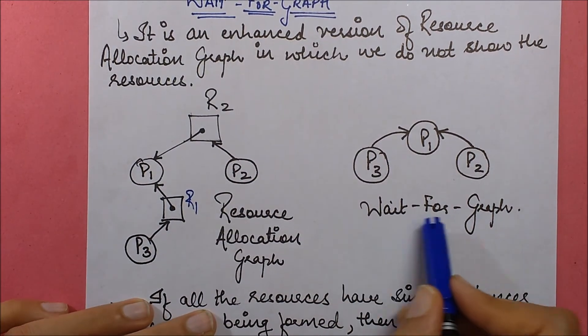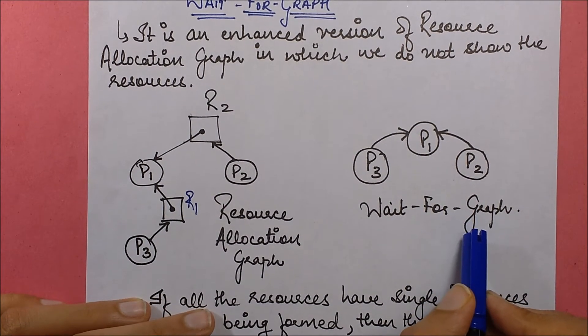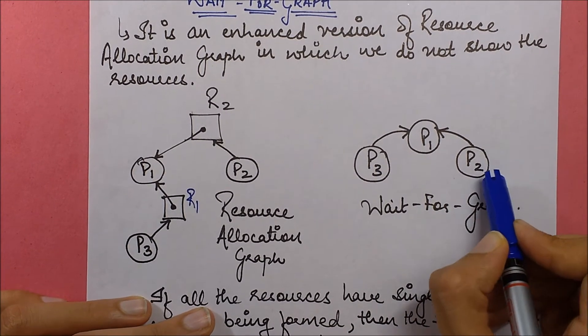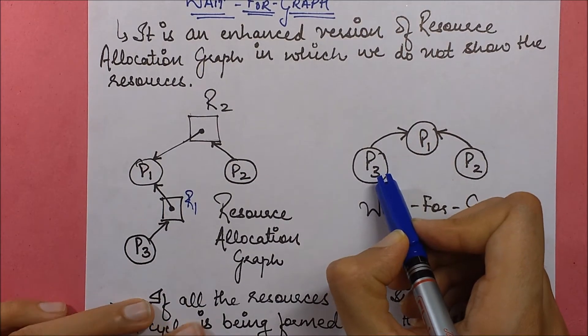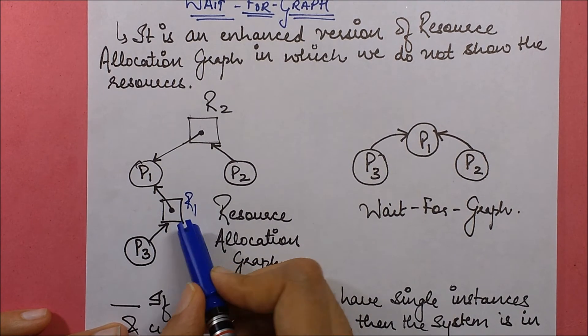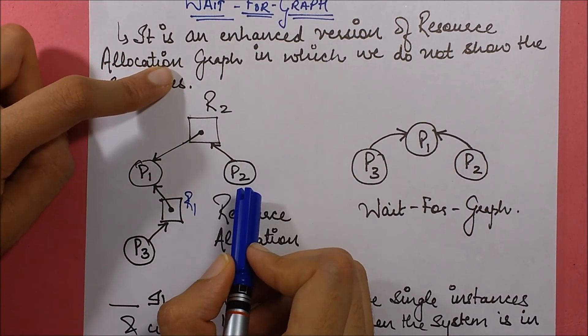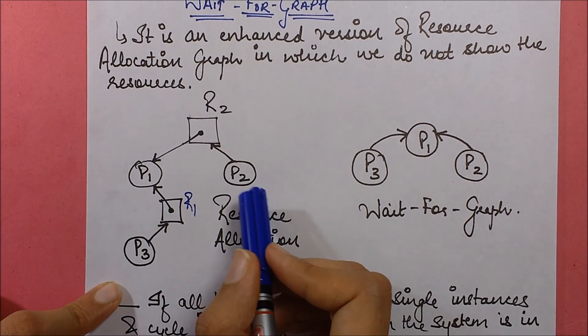This is what I would get, and this is known as wait-for-graph. What is it representing now? It is representing that P3 and P2 both are waiting for P1 to complete. This is because P3 is waiting for R1 which is held by P1, and P2 is also waiting for R2 which is also held by P1.